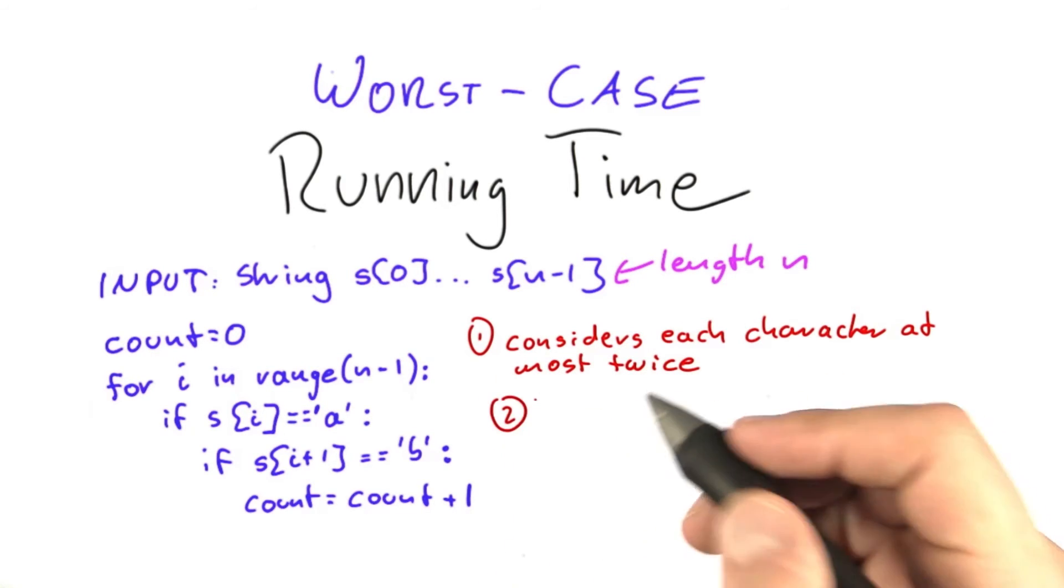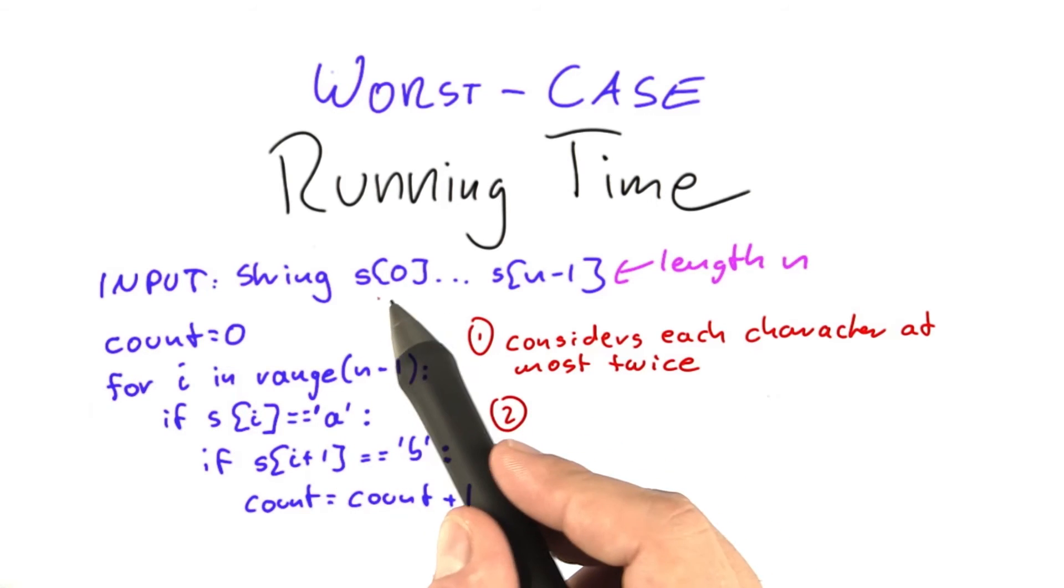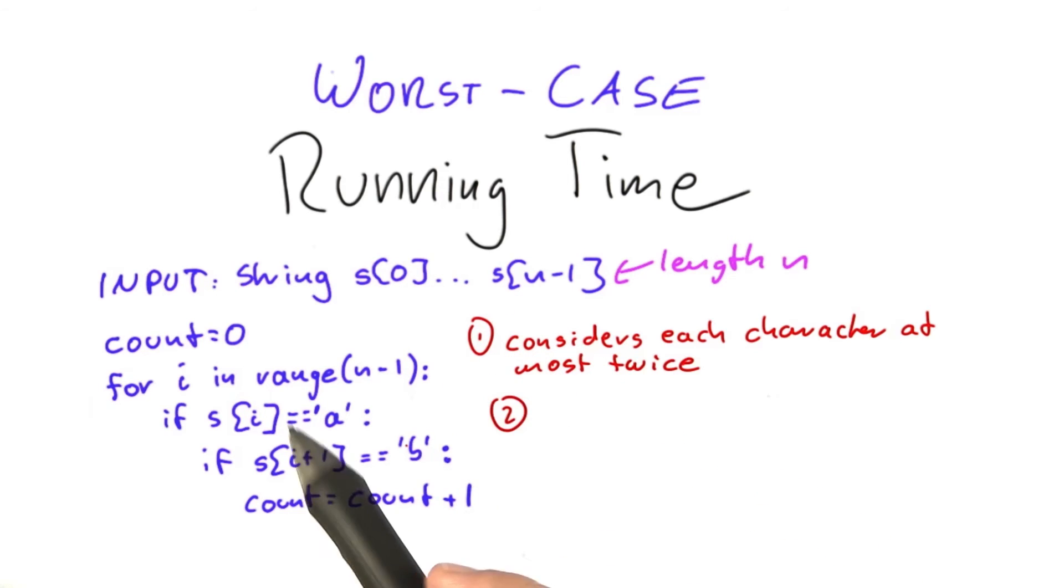And the second thing to notice is that each time the algorithm does consider a character, so it starts out at 0, 1, 2, 3, and so on, it will perform a constant number of operations. So if it finds an A, it will do either 1 or 2 additional operations.